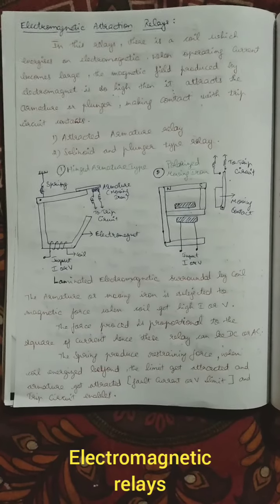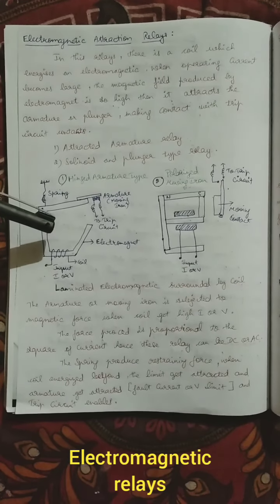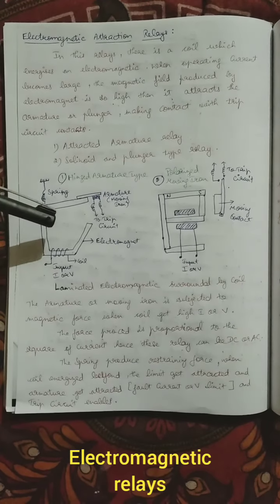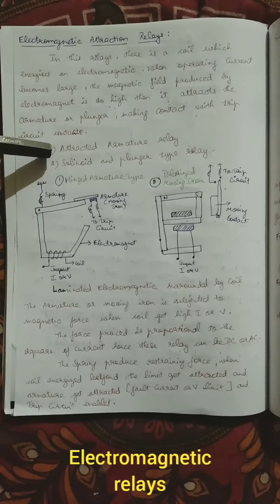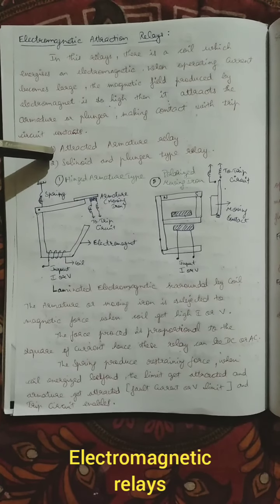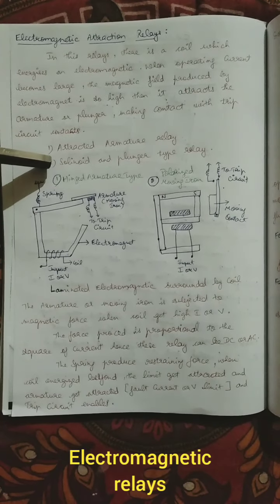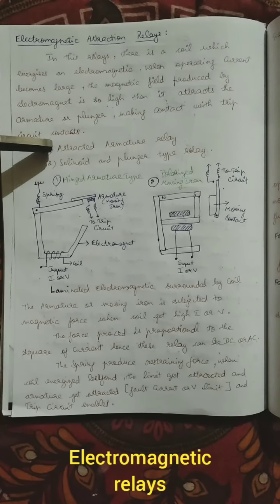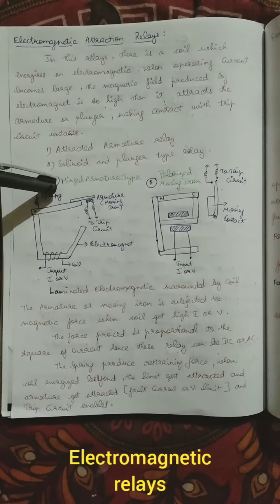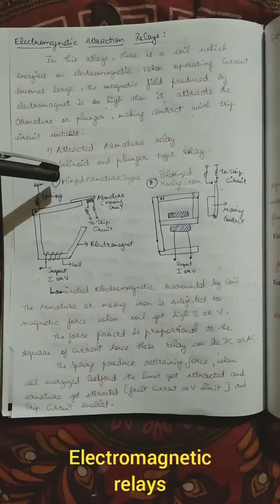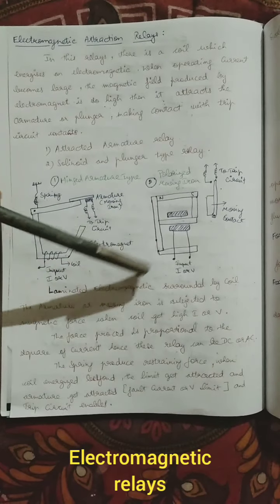This is the basics of the electromagnetic attraction relay. It is further classified into two types: attracted armature relay and solenoid and plunger type relay. The attracted armature relay is further classified into hinged armature type and polarized moving iron type.